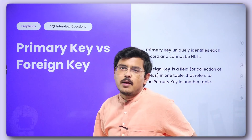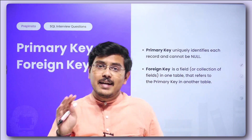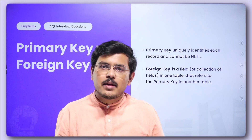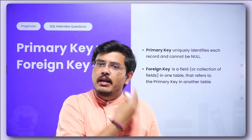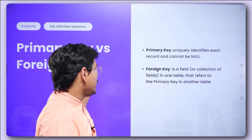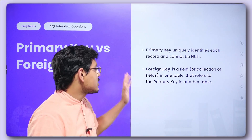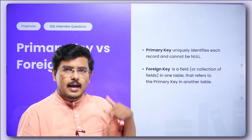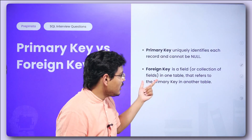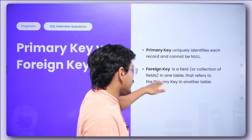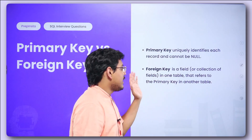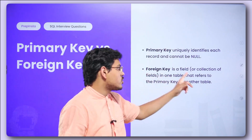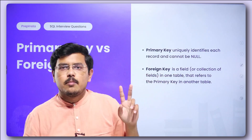The first question is primary key versus foreign key. Whenever I discuss DBMS preparation, the first thing I mention is keys. Primary key uniquely identifies each record in a table and cannot be null, whereas a foreign key is a field or collection of fields in one table that refers to the primary key in another table. This is basically used to relate two tables together.